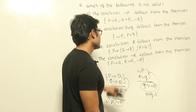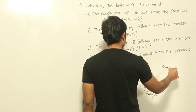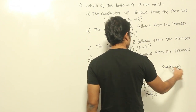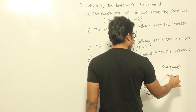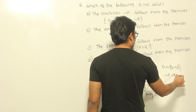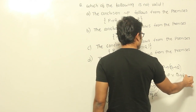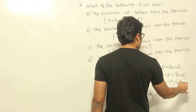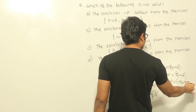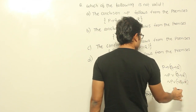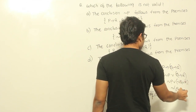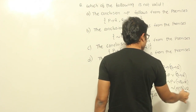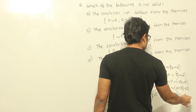Now let's see option C. It is given as P implies Q implies R. Let's simplify: I can write it as negation P or (Q implies R), and then as negation P or negation Q or R. I can rewrite this as negation (P and Q) or R, which means P and Q implies R.